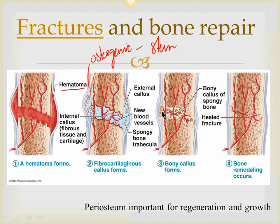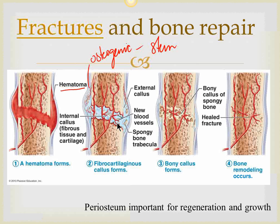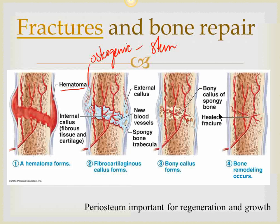The bone is still in an irregular form, so osteoclasts come and remove bone from the parts where it's not needed, giving a smooth line. The bone is then remodeled to its proper shape. So the sequence is: initial hematoma, then a fibrocartilaginous callus, which becomes bony, and then osteoclasts remove excess bone so the line is smooth.